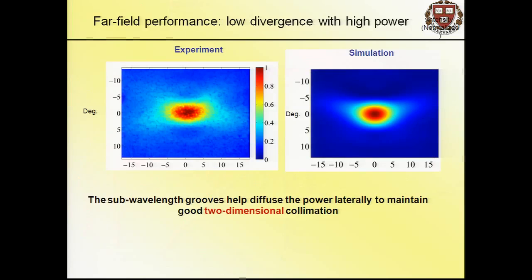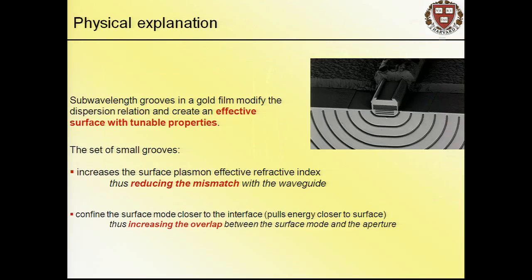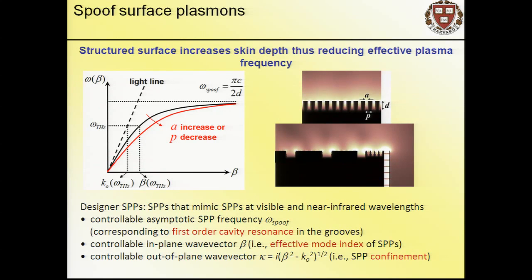These are experiments and simulations of the far field showing nice small divergence with high power level. The physical explanation: the grooves effectively increase the skin depth. By putting these sub-wavelength grooves like a metamaterial, energy piles up in the grooves, increasing skin depth so the surface wave becomes more bound. The dispersion curve gets changed—the asymptote moves up and down by a large value. The new plasma frequency is a geometrical frequency: the first-order resonance of these plasmonic cavities.